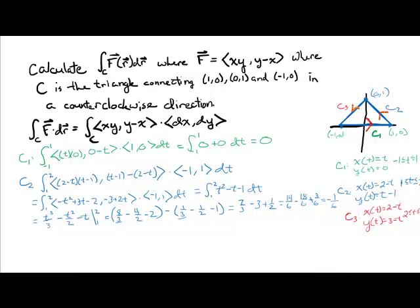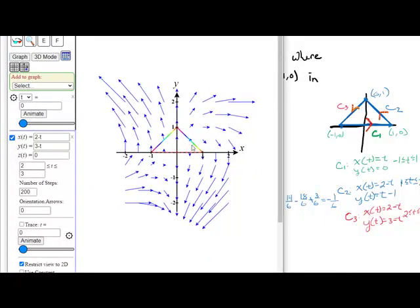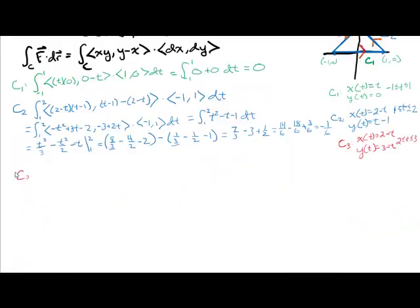Looking at the plot, C2 is here. Let's zoom in. This arrow is going to the right, which is a little bit against our path of motion. So it makes sense we're getting a negative along that piece. On C3, notice we're also going against our vector field, so we're going to expect a negative value on C3 as well.